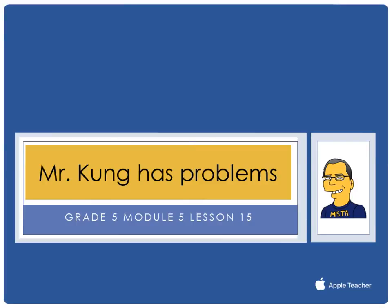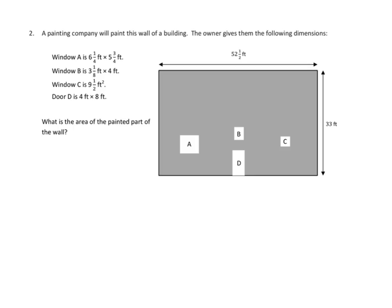Hello, and welcome to another episode of Mr. Kong Has Problems. Tonight, in Grade 5, Module 5, we are working on Lesson No. 15. Just like last night, we are solving real-world problems involving area of figures with fractional side lengths using visual models and/or equations. In other words, we're solving real-world problems. So, let's take a look at one of the three problems from tonight's homework.